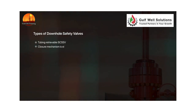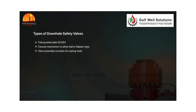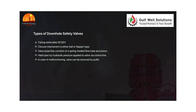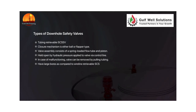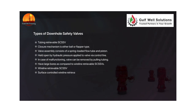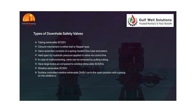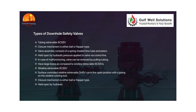Types of downhole safety valves: the tubing-retrievable SCSSV has a closure mechanism of either ball or flapper type. The valve assembly consists of a spring-loaded flow tube and piston, held open by hydraulic pressure applied via a control line. In case of malfunction, the valve can be removed by pulling the tubing. Tubing-retrievable valves have large bores compared to wireline-retrievable types. The wireline-retrievable SCSSV is run in the open position with a prong on the wireline running tool, and its closure mechanism is either ball or flapper type, held open by hydraulic pressure applied via control line.